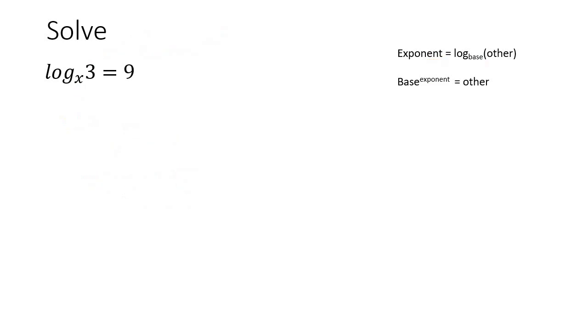Here's the next example. So by now you should be getting a better idea that this is the base, this is the exponent, and this is the other. So if we now had to go rewrite it as an exponential we would say base which is x, then it's to the exponent which is 9, and then it's the other which is 3.